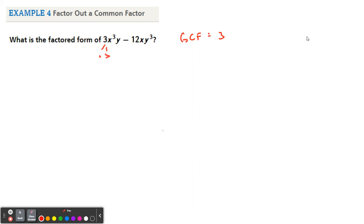And now we look at our variables. There are x's and y's. We have x to the third and x to the first here, so they both have 1x. And then I have y to the first and y to the third here. They both have 1y. So this is my GCF, 3xy. I'm going to write that down first and then open a parenthesis.